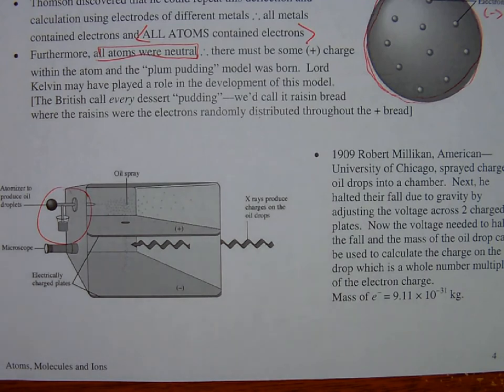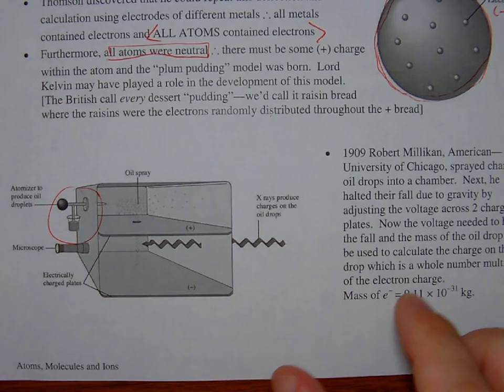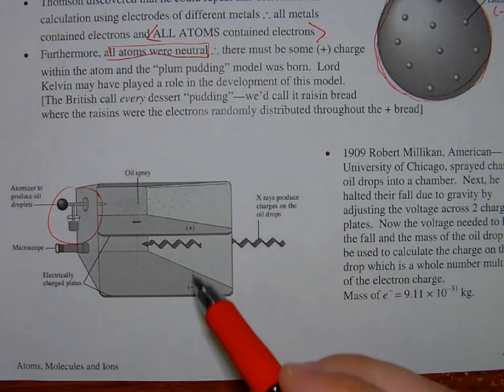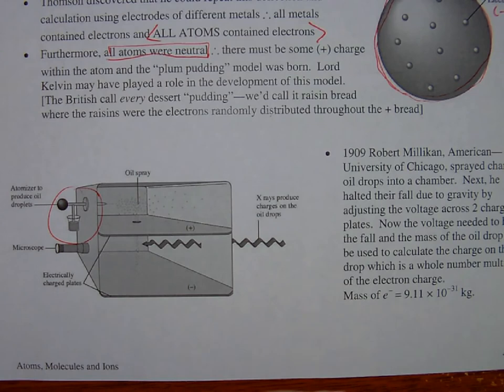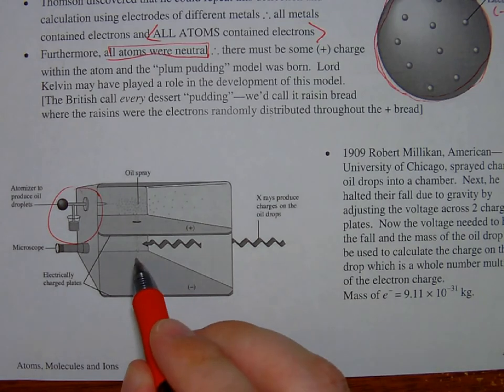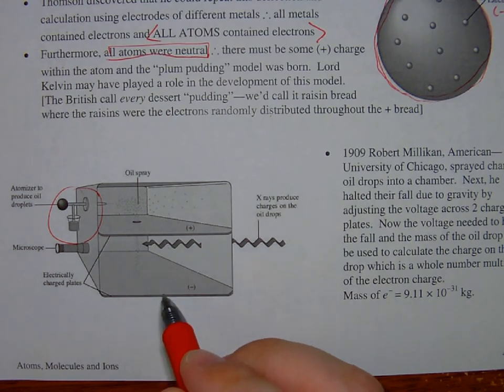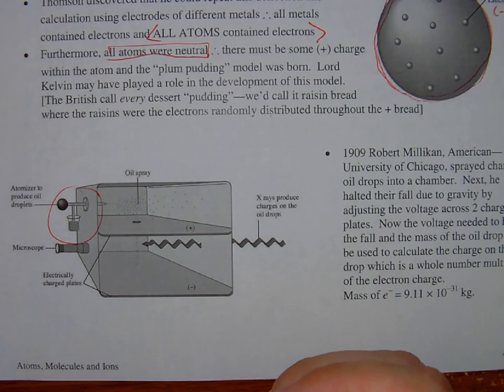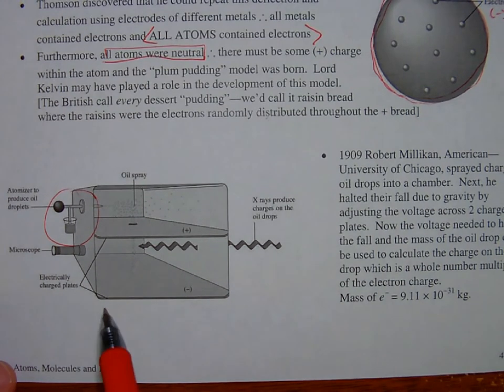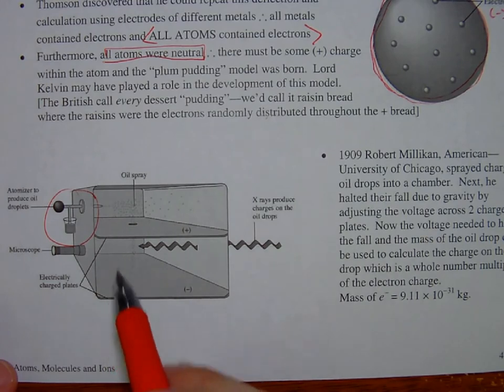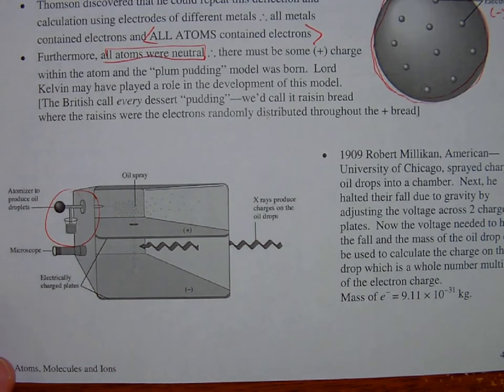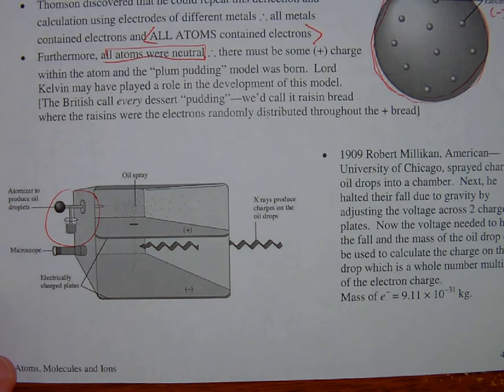And what he would do is he would adjust the charge, the positive charge, and then adjust the negative charge, the strength of them, until these oil droplets would actually levitate in place, meaning the attraction to the positive plate, the repulsion from the negative plate, they were in such perfect balance that they didn't move anywhere. They were in perfect balance. And so he used that information from the amount of voltage that he had to apply to these plates to calculate the charge on the oil drop itself.